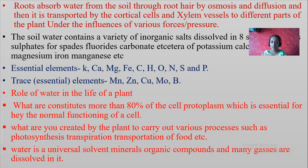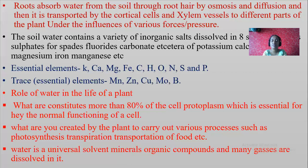What is meant by diffusion? Movement of gaseous molecules from the region of higher concentration towards the region of lower concentration. After diffusion or osmosis, water is transported by the cortical cells — the outermost layer of cells — and then by xylem vessels to different parts of the plant under the influence of various forces and pressure.